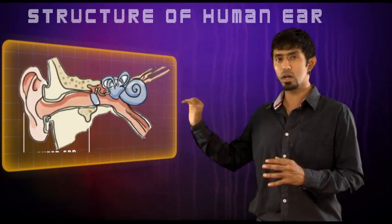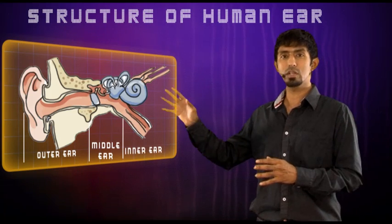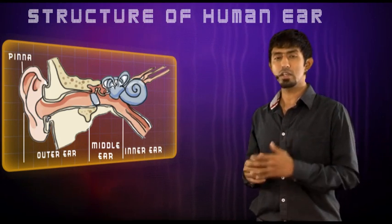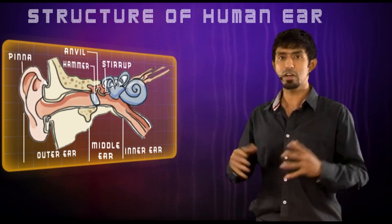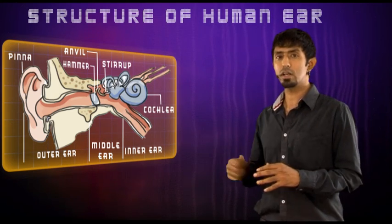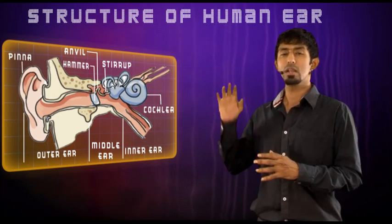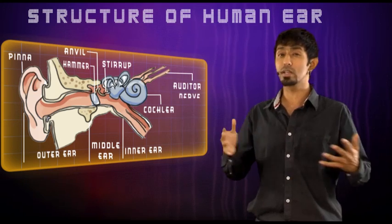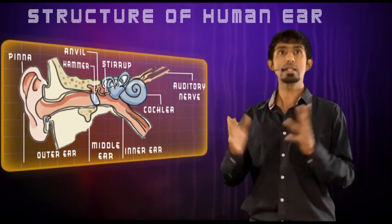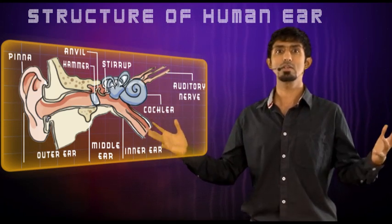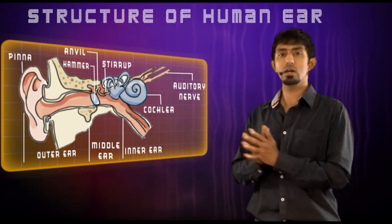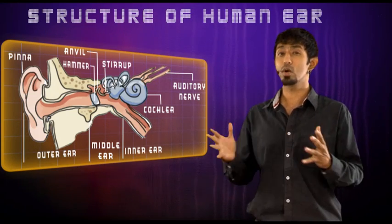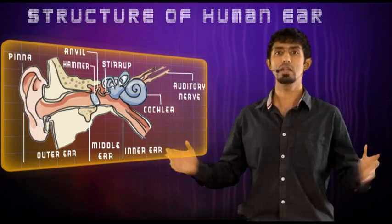So what do we have? An outer ear, a middle ear, and an inner ear. The outer ear — the pinna — directs sound inside. The middle ear — hammer, anvil, and stirrup — amplifies the sound. The cochlea, the inner ear, converts it and sends it to the brain. This electrical impulse travels through the auditory nerve to the brain, where it is interpreted as sound. This overall system is how we perceive and hear sound.